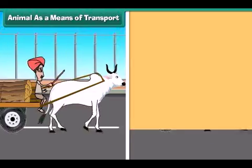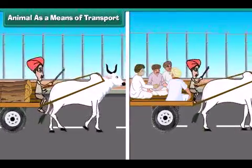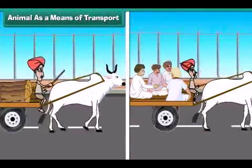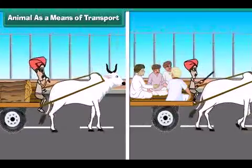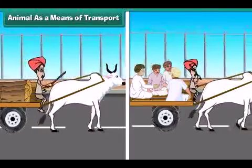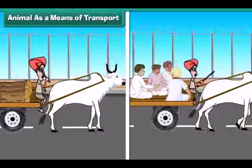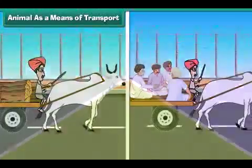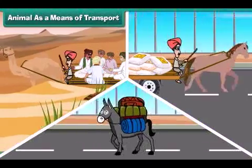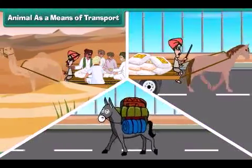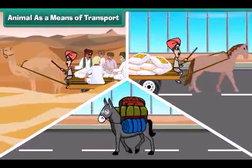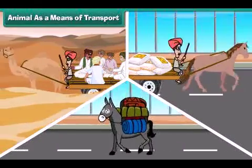Animals as a means of transport: Animal-driven vehicles such as Balakarts are used to carry straw, crops and sometimes even people. Animals like camels, horses and donkeys carry goods and people. So animals play an important role in transport.